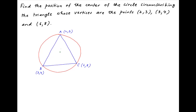Let P be the centre of this circle which circumscribes triangle ABC. Since points A, B and C lie on the circumference of this circle, the distance PA is equal to the distance PB is equal to the distance PC. All three are equal to the radius R of the circumcircle of triangle ABC.